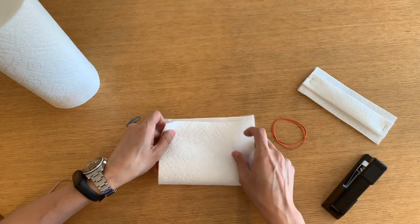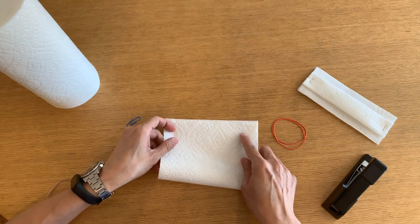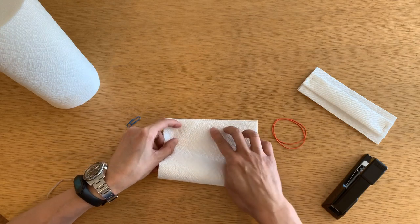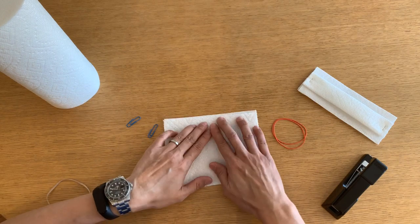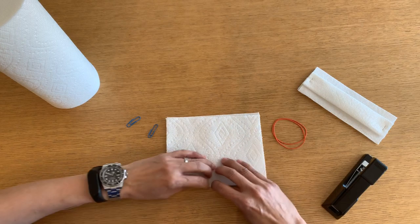So first thing you do is you're going to fold the paper towel in half. To make it a little neater, you might leave just a little space on the top edge right there. Fold it nice and crisp.